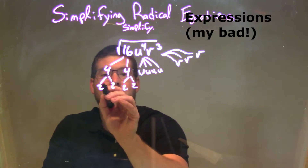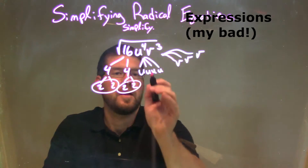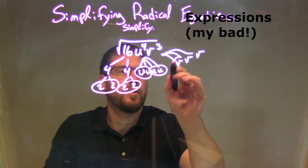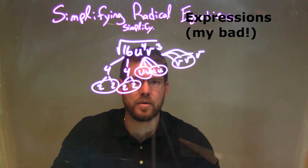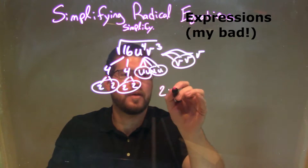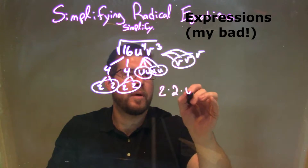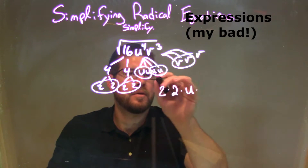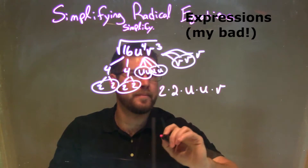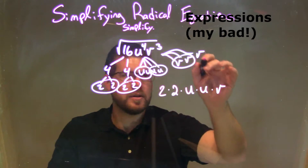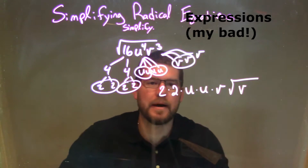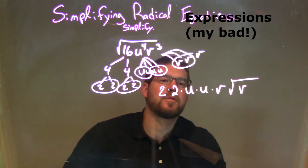Let's circle some pairs. I have two pairs of 2s, two pairs of u's, and one pair of v's. Every single pair that we have comes out to the outside. So I have one pair of 2, a second pair of 2, one pair of u, another pair of u's, and one pair of v. The only lone single is just that v by itself, so that's going to stay inside of my square root.